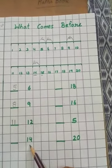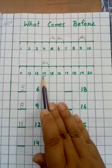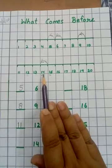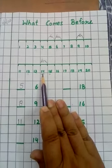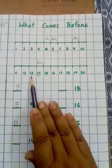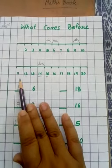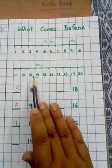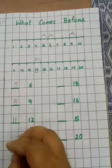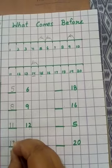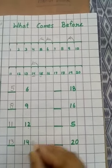Next is 14. Again, look at the number line. Here is 14. 14 के just पहले हमारे पास कौन सा number है in backward direction? फिर बोलेंगे पीछे चलते हुए क्रम में? 13. Very good. Here is 13 — 13 is just before 14.